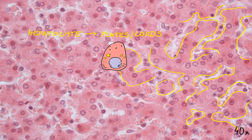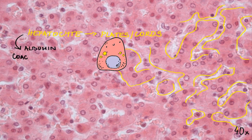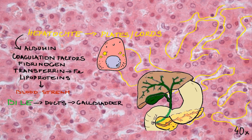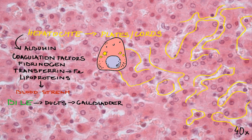The hepatocyte is a cell which serves many important functions in the body. These cells synthesize blood proteins such as albumin, coagulation factors, fibrinogen, transferrin — which is a carrier protein of iron — and various lipoproteins that are released into the bloodstream. They also produce bile, which is transported by a system of ducts and then stored in the gallbladder. Bile helps the absorption of fats by breaking down bigger lipid particles into smaller ones.